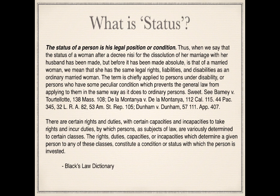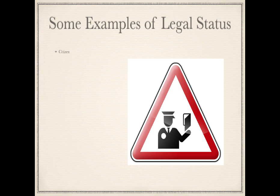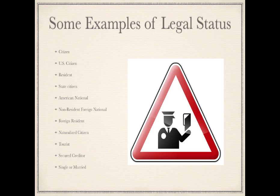Let's take a look at just a few examples of legal status. You very well may be a citizen — but citizen of who or what? U.S. citizen? Are you a resident? Are you a state citizen? Are you an American national? You could be a non-resident foreign national, foreign resident, naturalized citizen, tourist, secured creditor, and you could be single or married. The list goes on. You can see there is a long list of different types of legal status, and depending on your legal status, that will determine how your rights and obligations will be treated under the law. So status is critical.